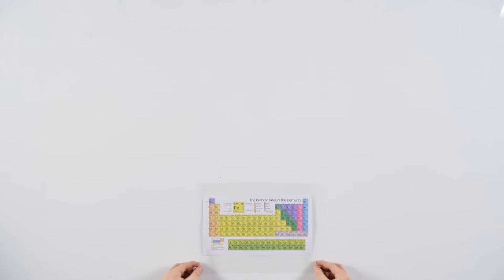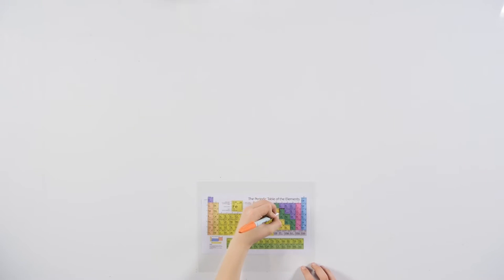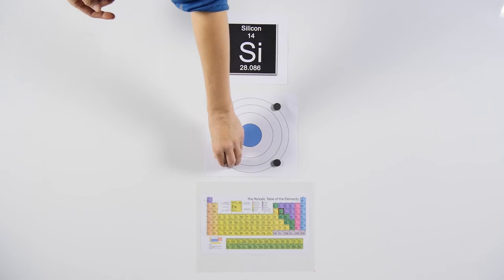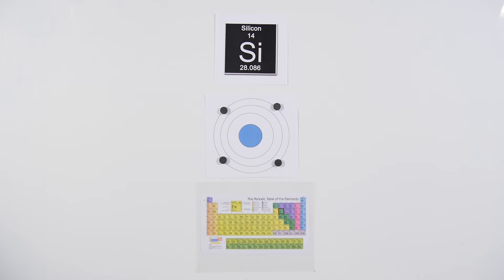This is silicone. It has 14 protons, 14 neutrons, and 14 electrons with 4 electrons in its outer shell. But the silicone atoms in solar panels have been modified. This silicone is infused, or doped, with a small amount of another element. This element makes the silicone either more likely to need an electron or have an electron to share.